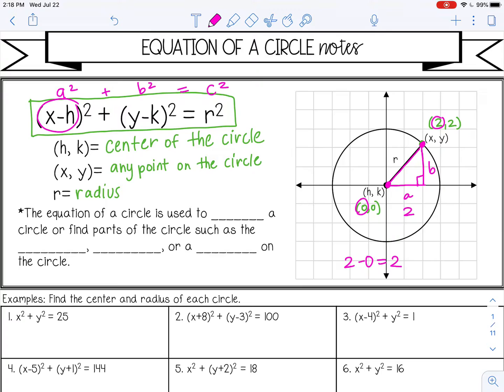And the b, in this particular circle, it's also 2. y minus k, so y minus k, 2 minus 0 is 2. So it fits into the Pythagorean theorem. And it doesn't just work for this example. It works for any circle that is graphed on the coordinate plane.